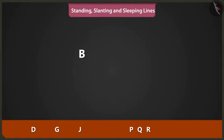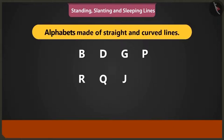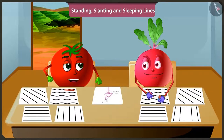B, D, G, P, R, Q, and J are alphabets made using straight and curved lines. Now you practice making straight lines like standing lines, slanting lines, and sleeping lines, and curved lines.